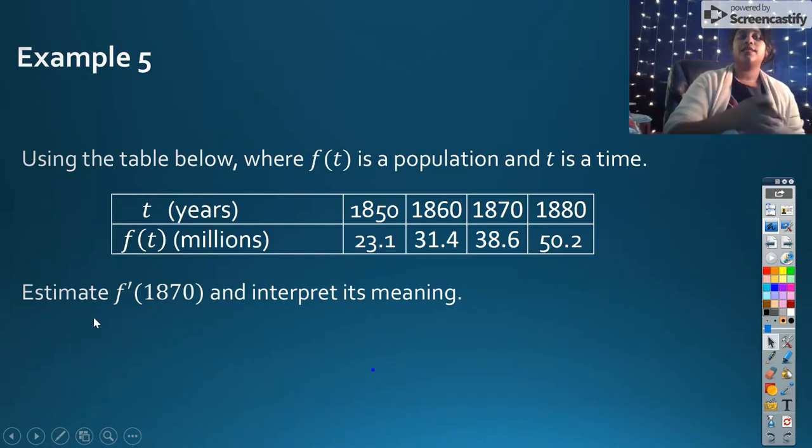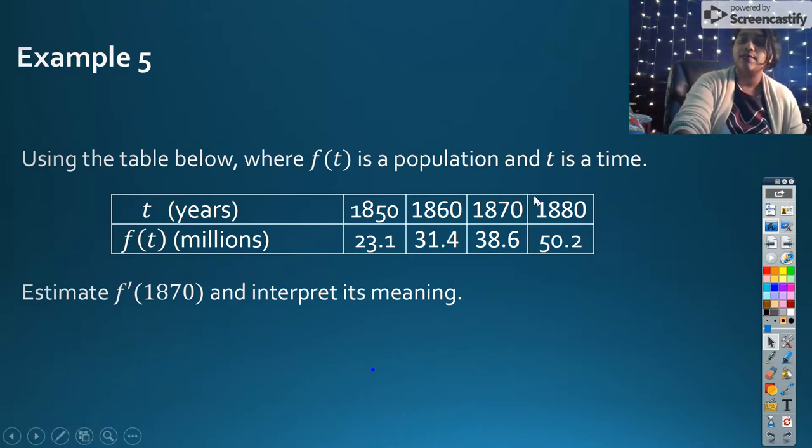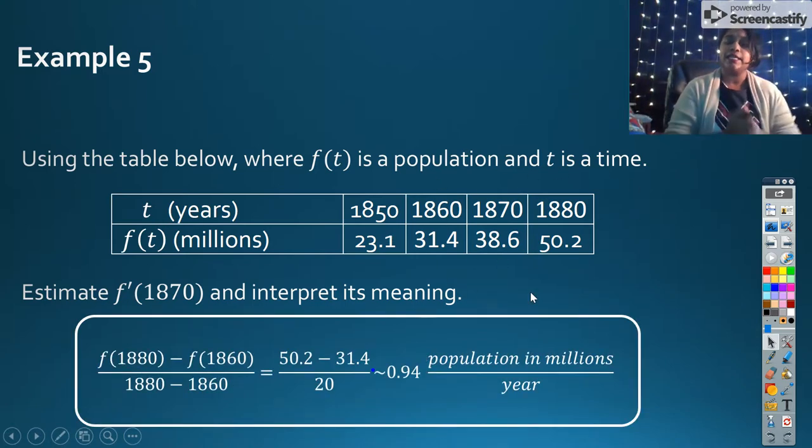So we're given this data, and this time we're asked to estimate F prime of 1870. So in your head, you think F prime. F prime is my derivative. My derivative is my slope, but specifically, it's instantaneous slope. So, well, I don't have any information to do instantaneous, but I can estimate average. So what we're going to do is we're going to estimate around it.